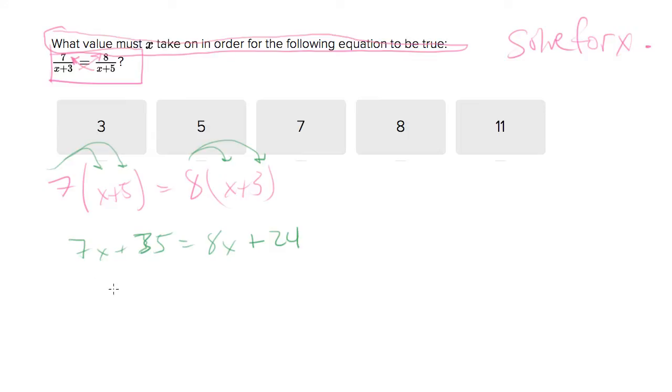And keeping that going, now let's collect like variables. You end up with, let's subtract 7x from both sides, and let's subtract 24 from both sides.